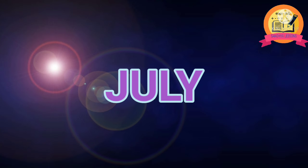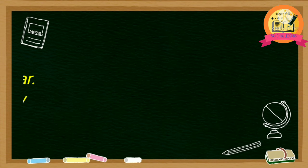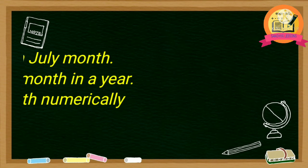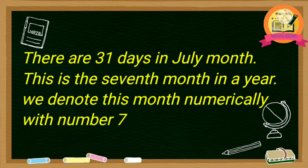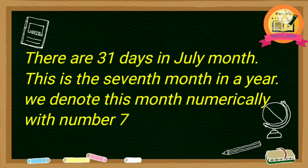J-U-L-Y — July. There are 31 days in July month. This is the seventh month in a year. We denote this month numerically with number 7.